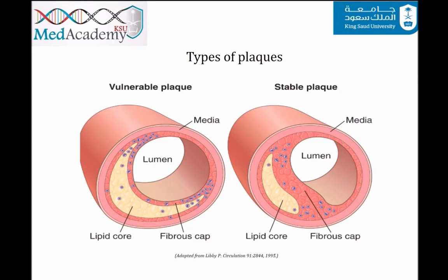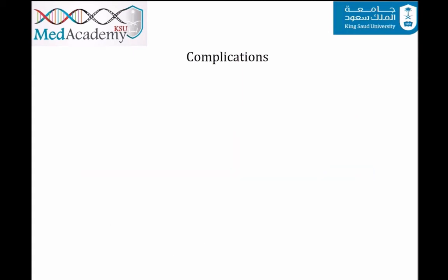Several complications can arise from atherosclerosis. Calcification makes the vessel wall more rigid and increases its fragility. Plaque rupture exposes pro-coagulant molecules to circulating blood, potentially leading to thrombus formation and infarction of the supplied tissue. Embolization occurs when disrupted fragments from the plaque travel to distal vascular sites. Finally, aneurysm can develop as fibrous plaque increases pressure in the vessel media, provoking weakening of elastic tissue with subsequent arterial dilatation.